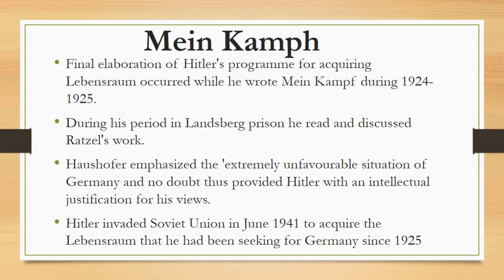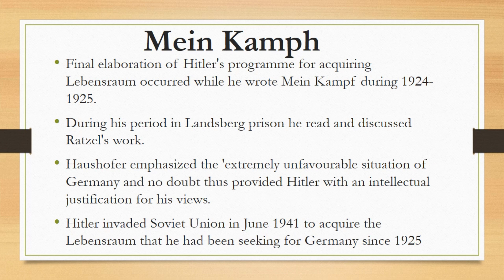The final elaboration of Hitler's program for acquiring Lebensraum occurred while he wrote his renowned book Mein Kampf during 1924 to 1925. Essentially this involved his study of geopolitics — that is, the impact of the environment on politics — which provided him with a quasi-scientific justification for the plans he had already worked out. During his period in Landsberg Prison, following the failure of his notorious Munich Beer Hall Putsch in November 1923, he read and discussed Ratzel's work and other geopolitical literature provided by a Munich professor of geography called Haushofer and fellow prisoner Rudolf Hess. Haushofer emphasized the extremely unfavorable situation of the Reich from the viewpoint of military geography and Germany's limited resources of food and raw materials, and thus provided Hitler with an intellectual justification for his views.